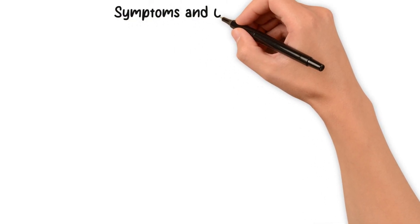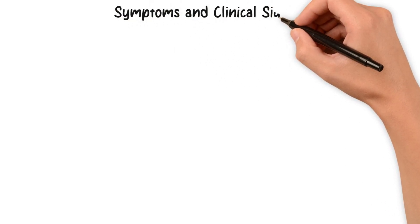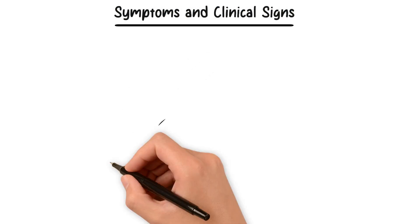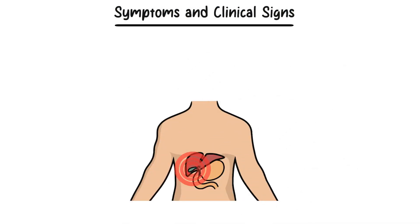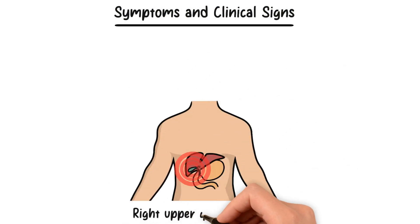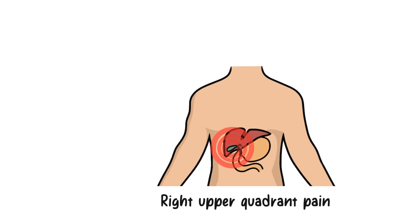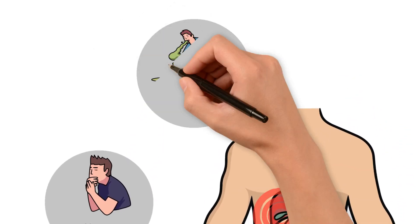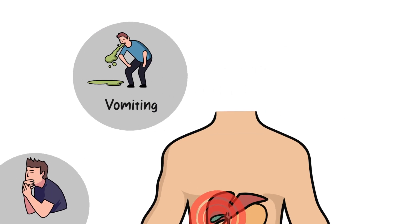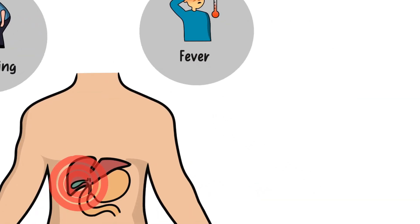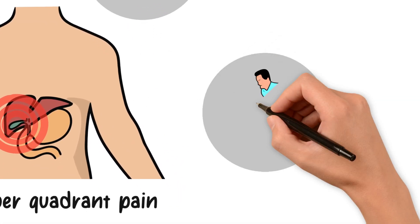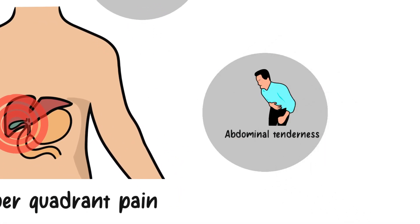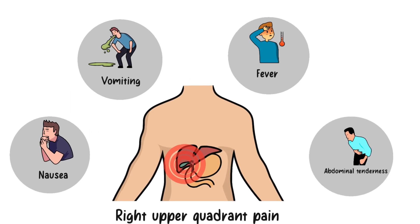The symptoms of acute cholecystitis can be quite alarming. Patients often experience intense pain in the upper right abdomen, which can radiate to the back or right shoulder. Nausea, vomiting, fever, and tenderness in the abdominal area are also common.